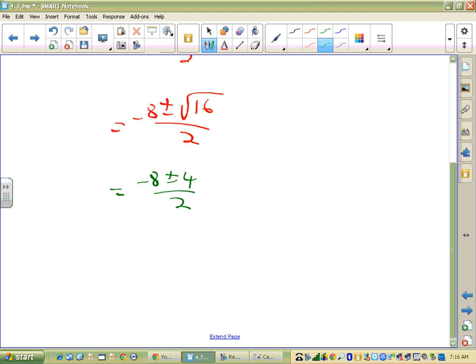So then we get negative 8 plus or minus 4 all over 2. And that's not good enough. Remember, if you have all numbers like this, you're going to get rational answers. So we have negative 8 minus 4 over 2, which is negative 12 over 2, which is negative 6.